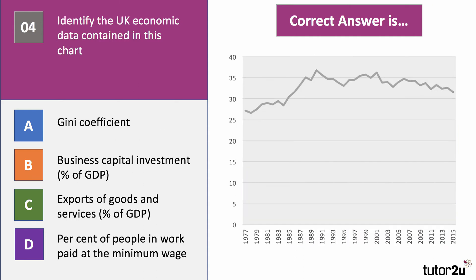Chart number four: identify the UK data contained in this chart — just a number is shown here. The correct answer is A — it's a measure of the Gini coefficient. The Gini coefficient is one way we measure the scale of income inequality in a country; it can be measured from 0 to 1 (where 1 is perfect inequality) or from 0 to 100. The Gini coefficient for disposable income has actually been gently falling in recent times, having risen sharply in the late 70s and 1980s.